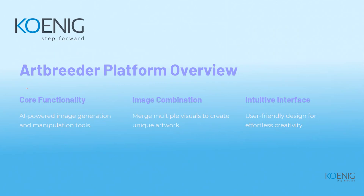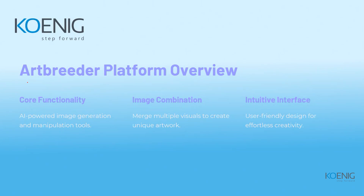Artbreeder is one such platform. As mentioned, behind AI art tools, deep learning technology is present. Artbreeder is a platform through which we can do many things — basically it is used for image generation. We just have to provide input in our own natural language, called a prompt, and with that input it generates new images. Artbreeder is a good platform for creating images, and in the demonstration I'll show you how to use it.